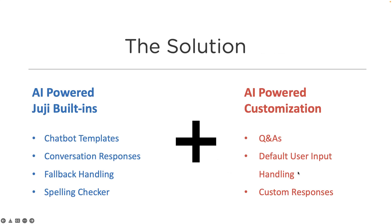At Juji, we really care about how free text responses are handled, and we're very proud of that. We actually encourage our users to add more free text, open-ended questions to collect more information. There are two sides to the solution. One is Juji provides AI-powered built-ins: chatbot templates, conversation responses for a given question that cover many digressions, feedback handling, and spelling checkers.